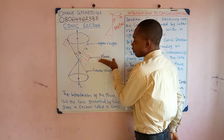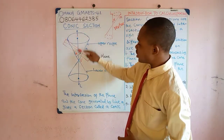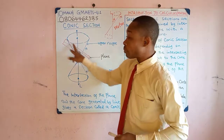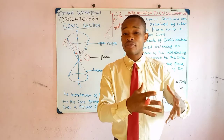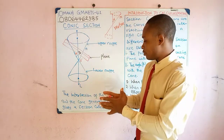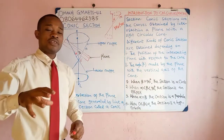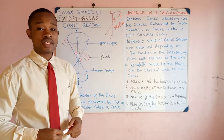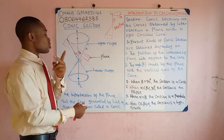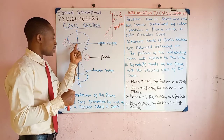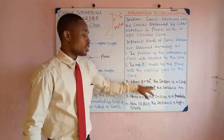Now, if we draw a plane and the plane intersects this cone, intersecting it such that the plane makes an angle beta with the vertical axis of the cone, this intersecting plane generates different kinds of conic sections. The type of conic section depends on: one, the position of this intersecting plane with the cone, and two, the angle beta that the plane makes with the vertical axis of the cone.